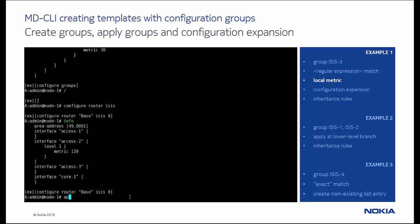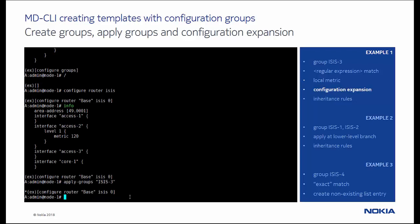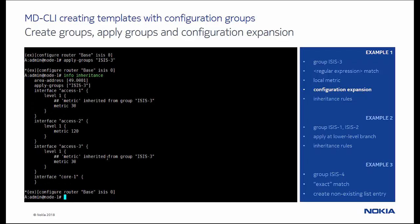Next, we apply the configuration group isis3, and see the expansion of the configuration using the info inheritance command. Notice that interface access 2 has retained its metric 120, since local configuration statements have the highest precedence when configuration groups are applied.